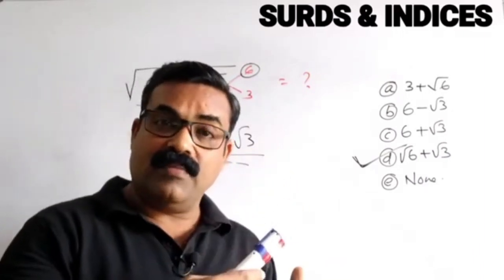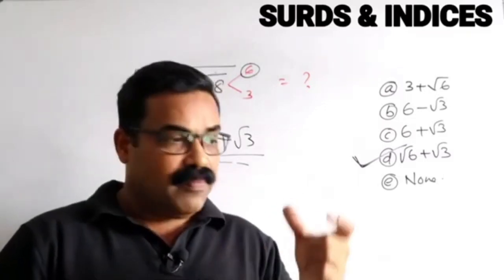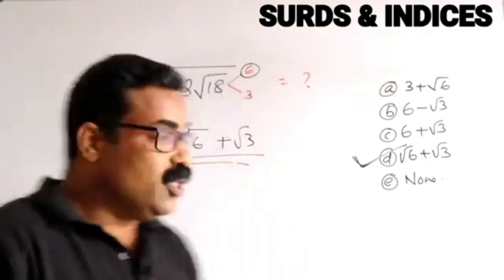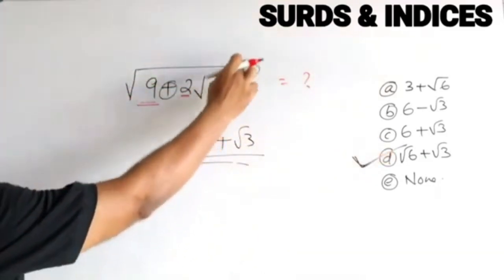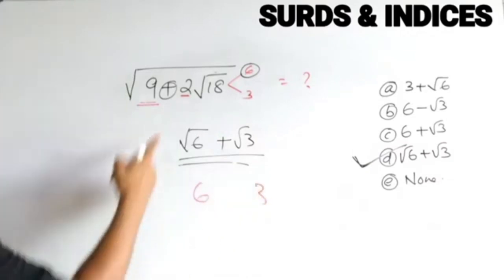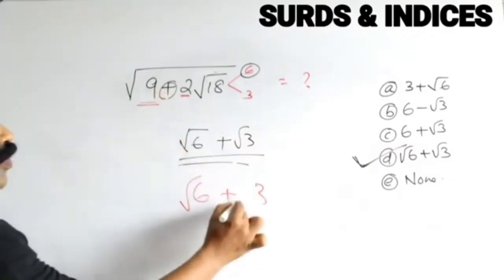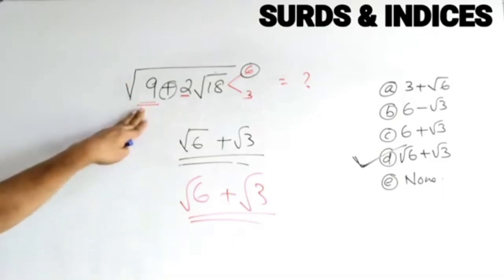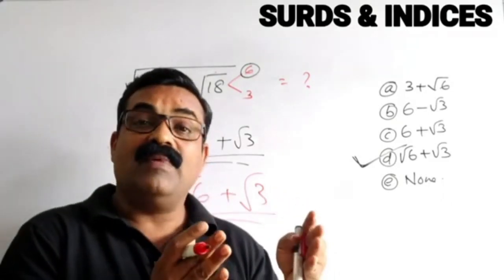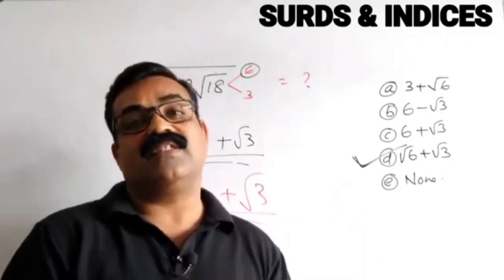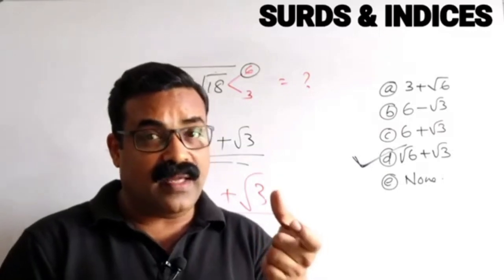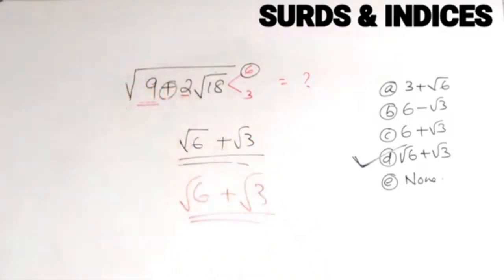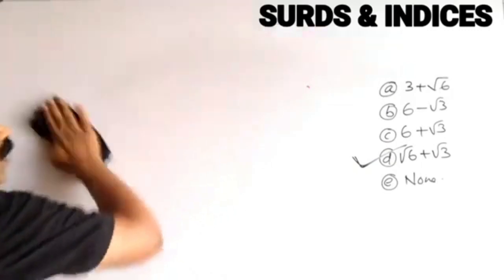Before going to the exam hall, practice this type of question. By looking at the question directly, you can write the answer without going through all the steps. Here it is 9, here it is 18, so 6 and 3. Since it is plus, write root 6 plus root 3. This is a very important trick and students who don't know it will think this is a tough question.